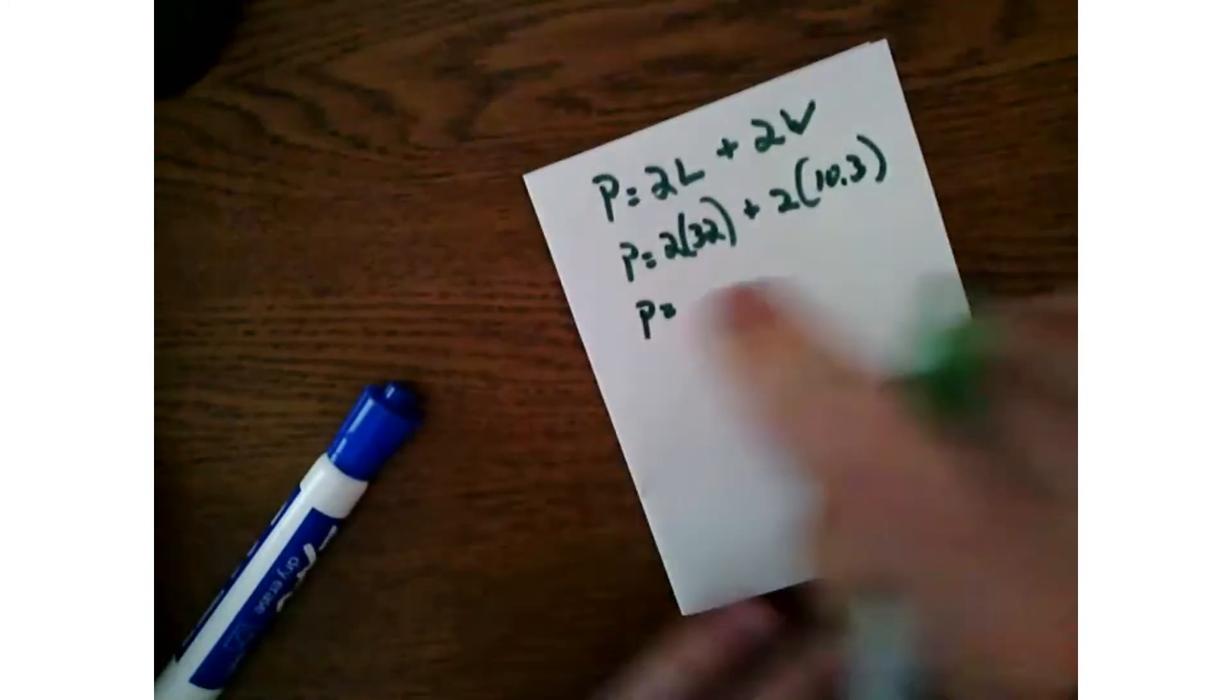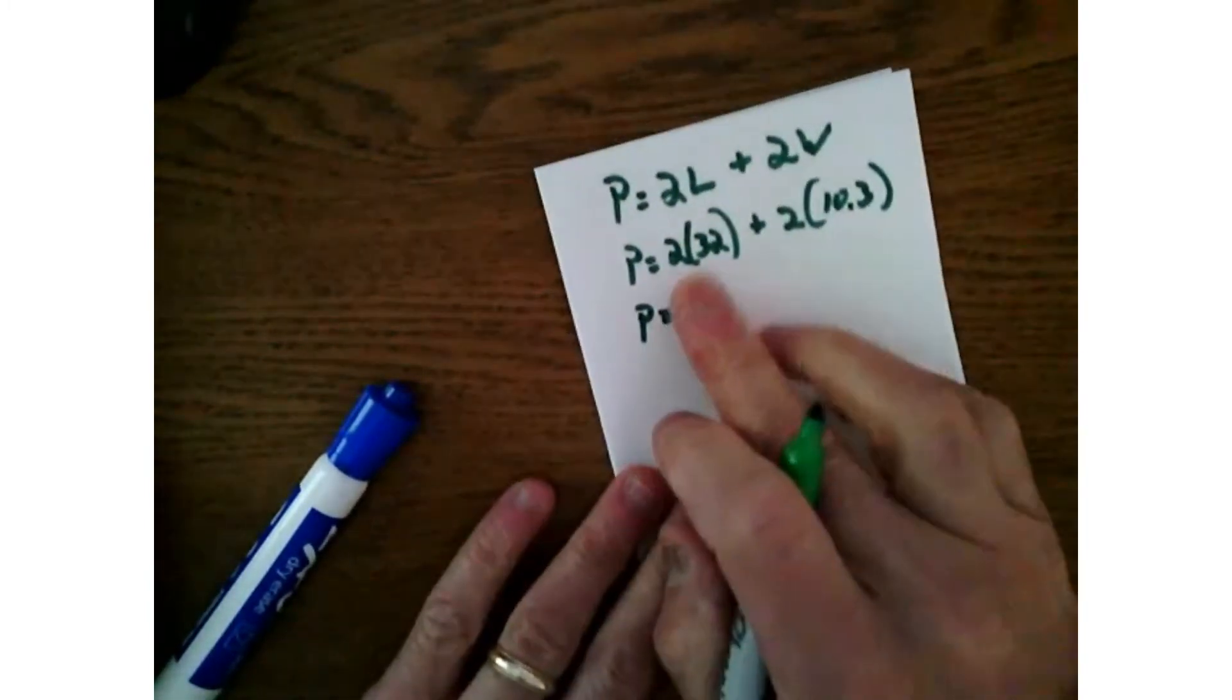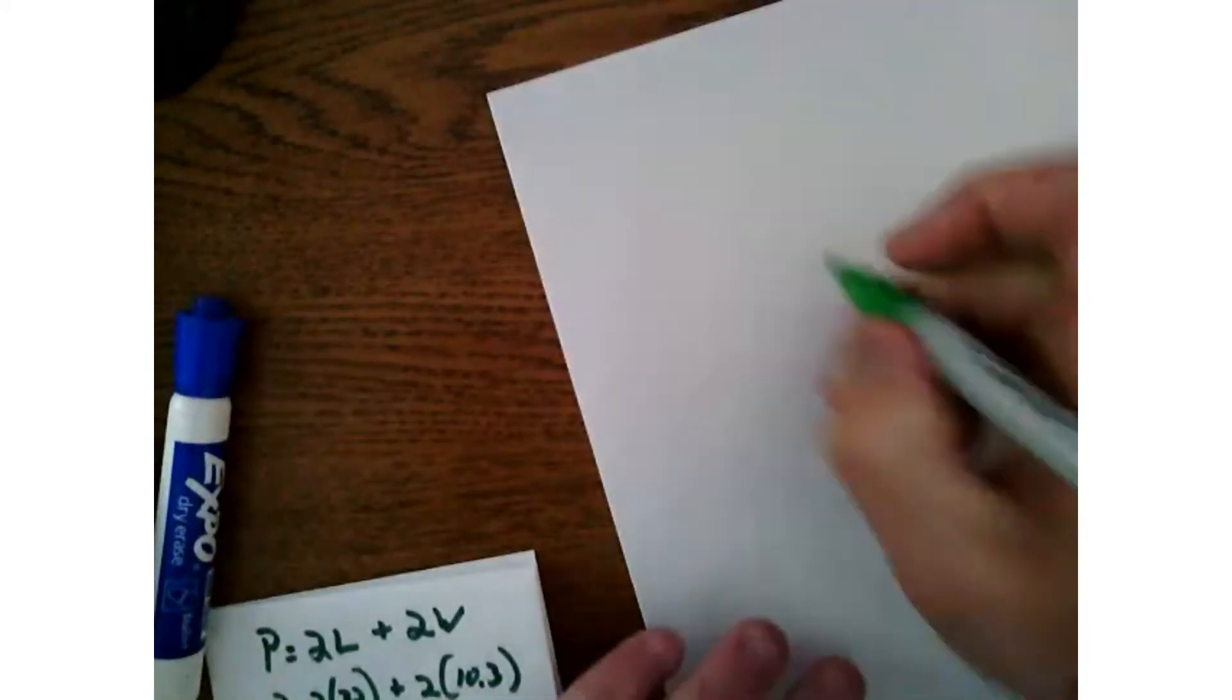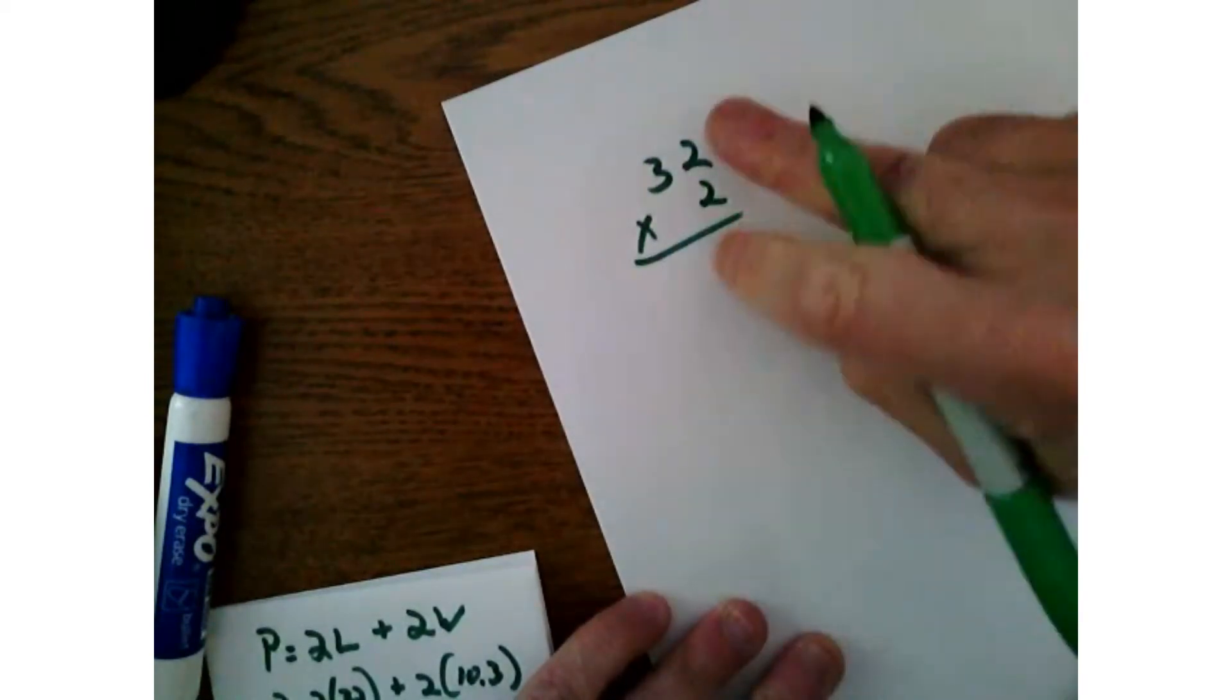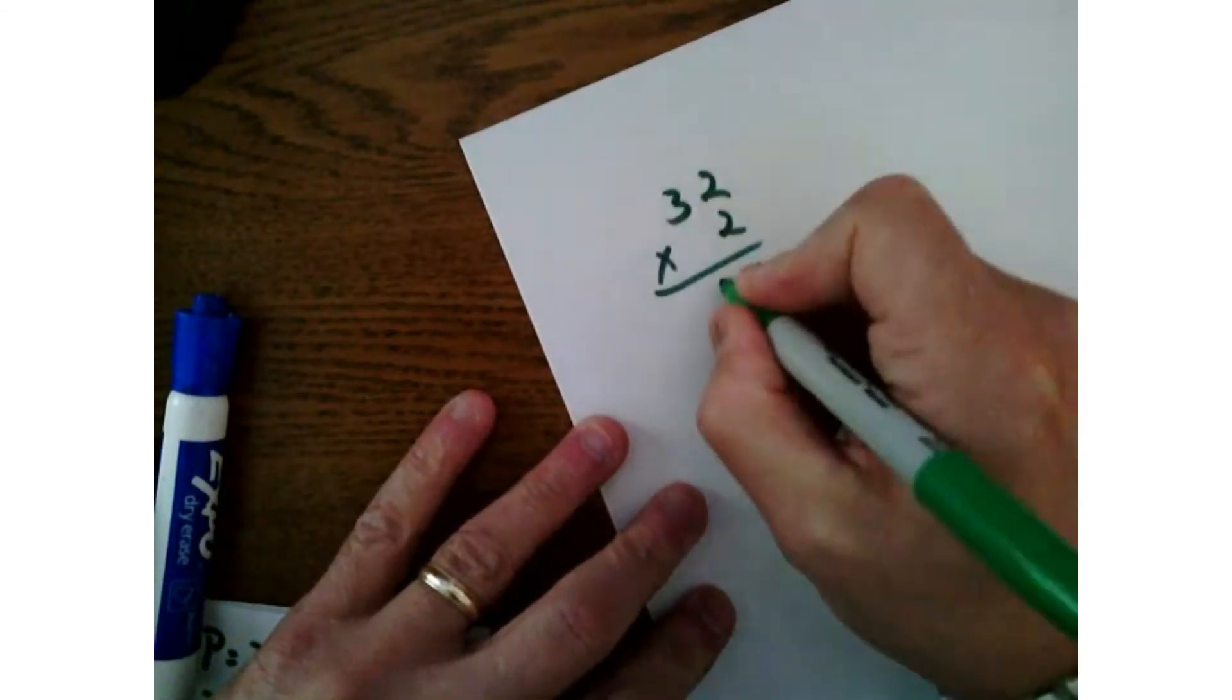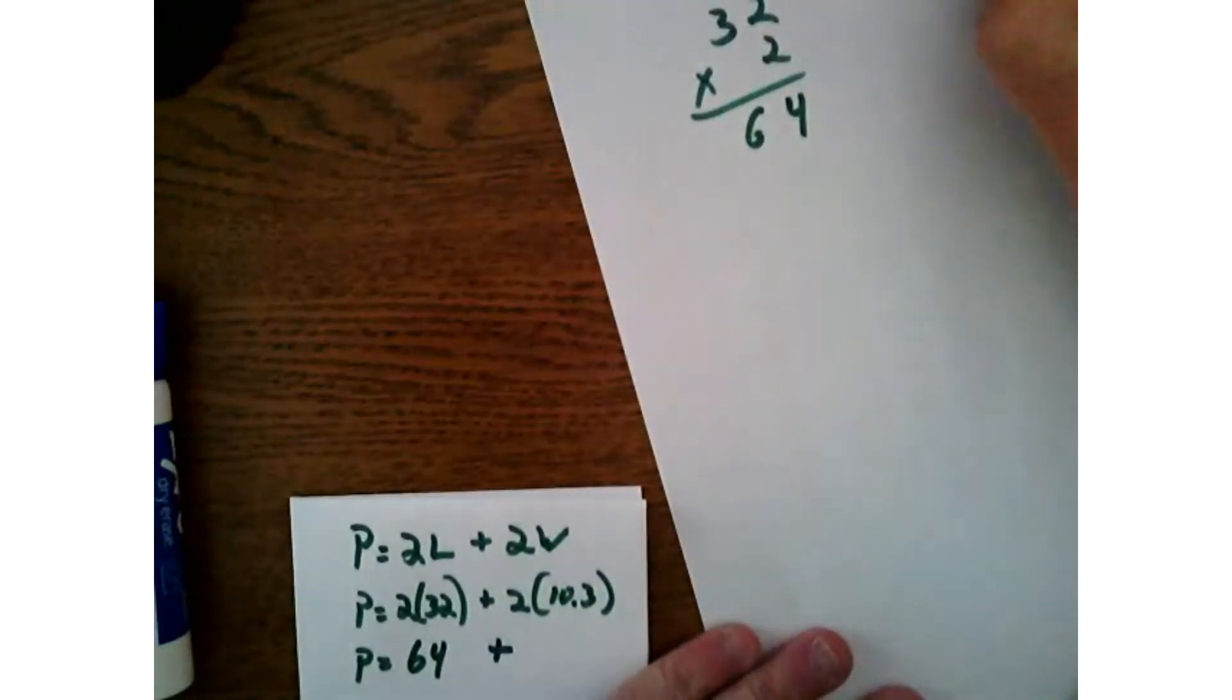Now I can get rid of this, I'm done with that for now. Here's my paper. Now I've got some work to do, two times 32 and two times 10.3. Don't do it here, keep this nice and beautiful, do it over here. All right, we'll do 32 times two. I just used a commutative property. I didn't want to do two times 32, I wanted to do 32 times two. That's a four, oh, 64. That wasn't so hard.